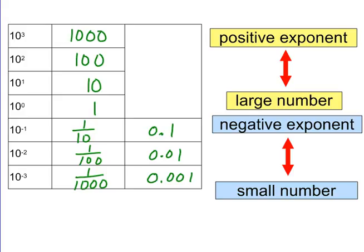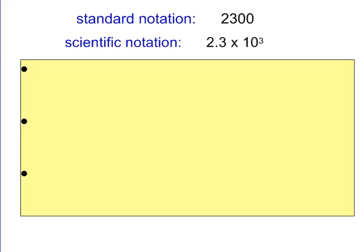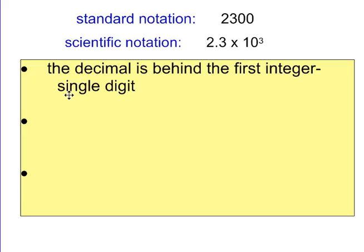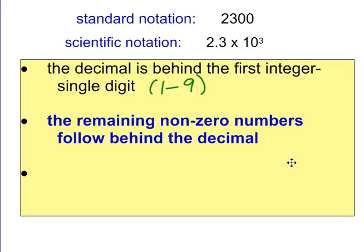If we take the number 2,300 in standard notation and compare it to 2.3×10³ in scientific notation, we can see how to set things up. The decimal goes behind the first single digit — and when we say single digit, we mean numbers 1 through 9; zero does not count as the integer we use in scientific notation.